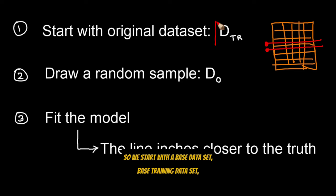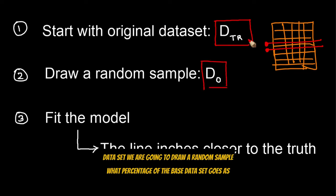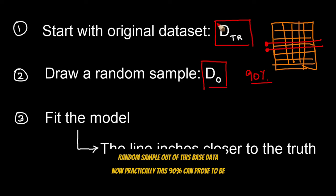So we start with the base data set, base training data set, which contains all the records, all the rows in the data. Now from this base data set, we are going to draw a random sample. What percentage of the base data set goes as random sample can be determined by the user. Let's say you are taking a 90% random sample out of this base data.